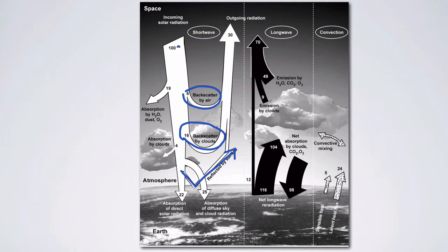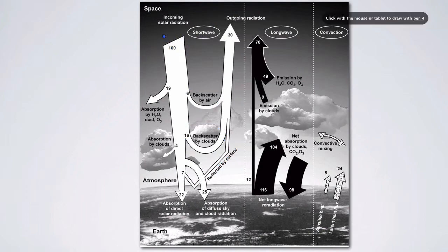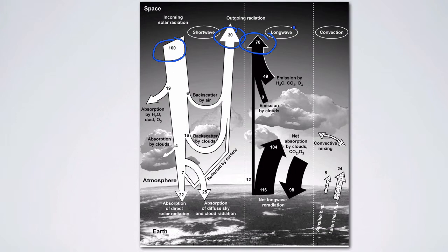That simple equation shows that we take the amount of shortwave radiation coming in — 100 units — and the amount of shortwave going out is 30. That's balanced by the amount of longwave radiation coming out, which is 70. They're not showing any longwave radiation entering the atmosphere, only shortwave. So that's a very simple energy budget: 100 equals 30 plus 70.